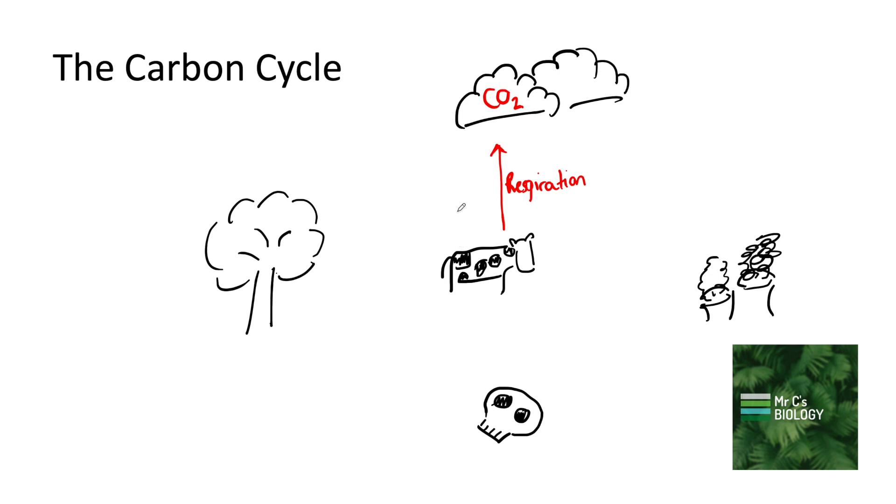That carbon dioxide can come out of the air through photosynthesis that plants do. We can draw our little arrow there as well.